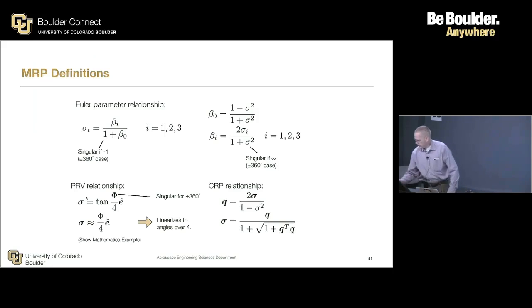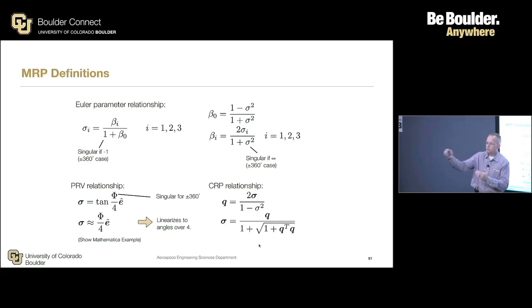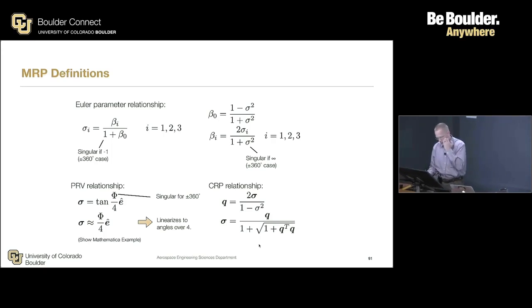And there's also, if you can do the math, there's ways to relate these CRPs to MRPs, and we can go back and forth. So all these Rodriguez tend to have nice, compact, direct relationships. We don't have to go to and from DCMs all the time just to relate one to the other. DCMs work, but it's nice when you've got these really compact, elegant, analytical answers.